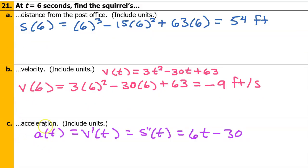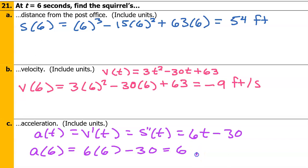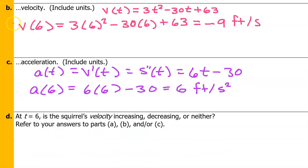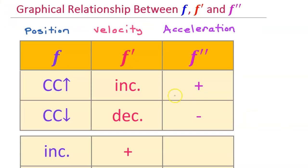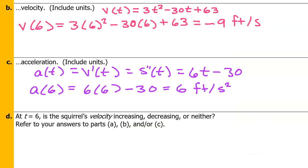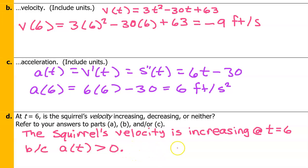Part C: find the acceleration at time t equals 6 seconds. Using the acceleration formula from problem 15, that is 6 feet per second squared. Part D: at t equals 6, is the squirrel's velocity increasing, decreasing, or neither? Velocity will be increasing when the acceleration is positive, and decreasing when the acceleration is negative. Because the acceleration is positive at t equals 6, we know the velocity must be increasing. The squirrel's velocity is increasing at t equals 6 because the acceleration is positive.